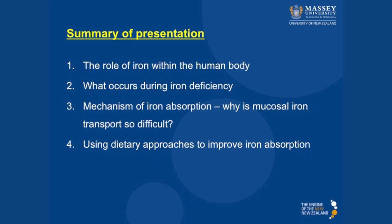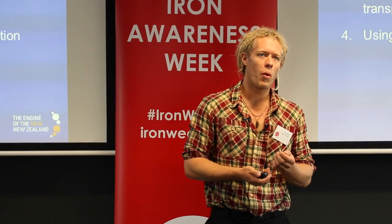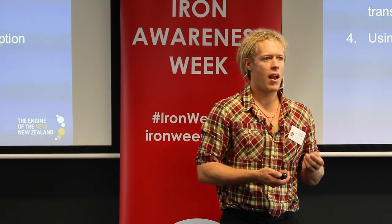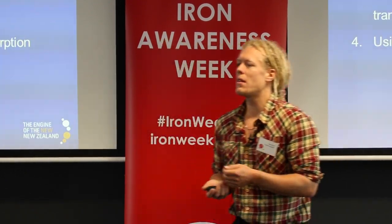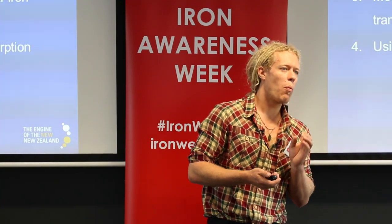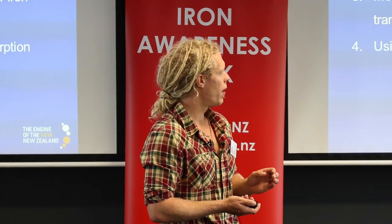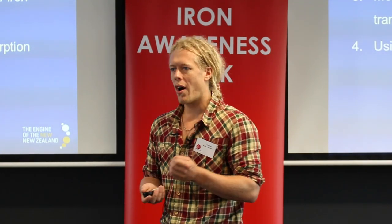I'm going to break this presentation down into four different parts. Points one and two I'm going to be quite brief on, but I think it's important that we know what iron does in the body, and it's also important to know when you have a deficiency in iron, what actually happens and why iron deficiency is actually bad. But I want to spend the majority of today looking at the mechanism of iron absorption — what actually happens within the gastrointestinal tract and why this makes iron so difficult to absorb. And then I want to talk finally about dietary approaches that we can use to improve iron uptake and ways we can actually improve iron bioavailability.